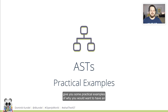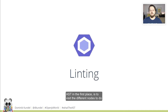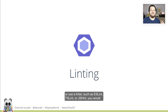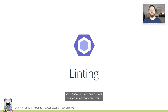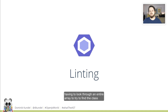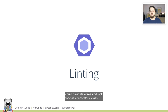To give some practical examples of why you'd want an AST in the first place: you can visit different nodes to do things such as linting. If you build or use a linter such as ESLint, TSLint, or JSHint, you want to do analysis not just purely on the format of your code, but you want more detailed rules — for example, around how you name your classes. Rather than having to look through an entire array to find the class keyword somewhere, you could navigate a tree, look for class declarations, and see how they fit into the grander scheme. So you can do much more advanced linting.